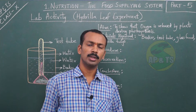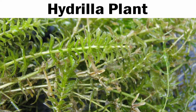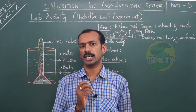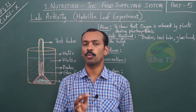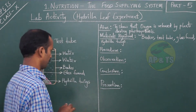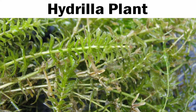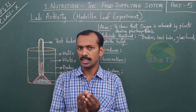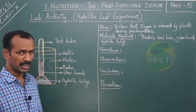Now for the procedure: we have taken the materials — beaker, test tube, glass funnel, and hydrilla twigs. First, take the beaker and fill it half or more with water. Then take the hydrilla twigs. The hydrilla plant is a water plant — it lives in water. We use it so the leaf does not spoil or decompose. These hydrilla twigs — small branches of the hydrilla plant — are placed in the beaker.